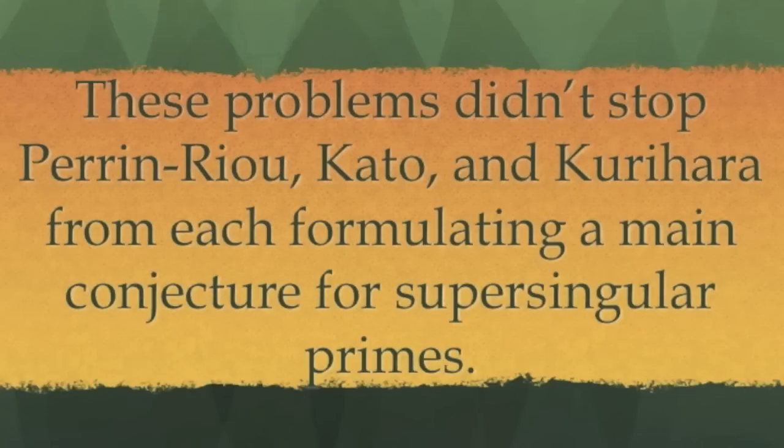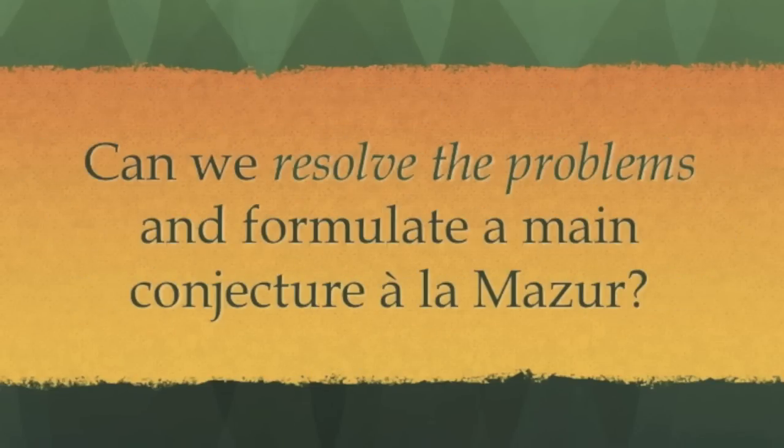Using more advanced objects, Perrin-Riou, Kato, and Kurihara formulated main conjectures at supersingular primes. But, we would like a main conjecture in the spirit of Mazur's.